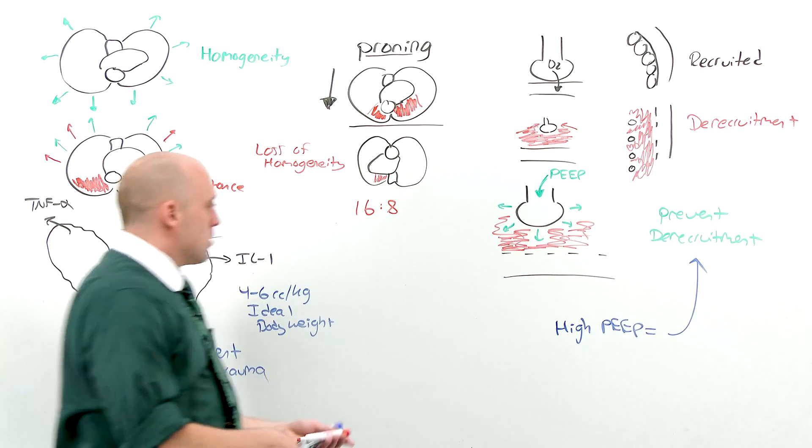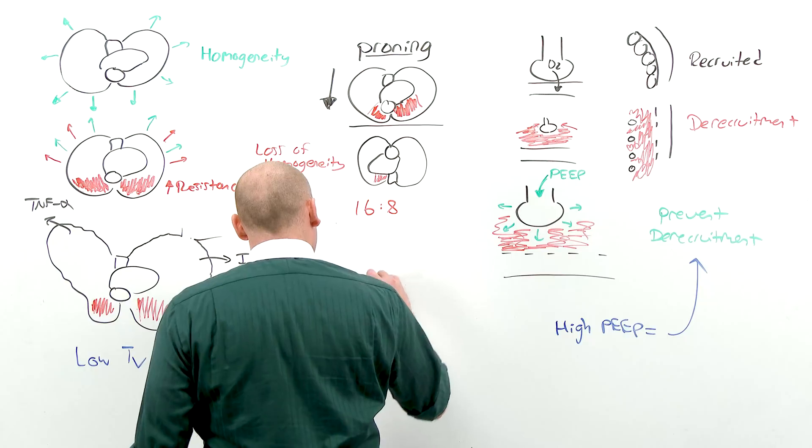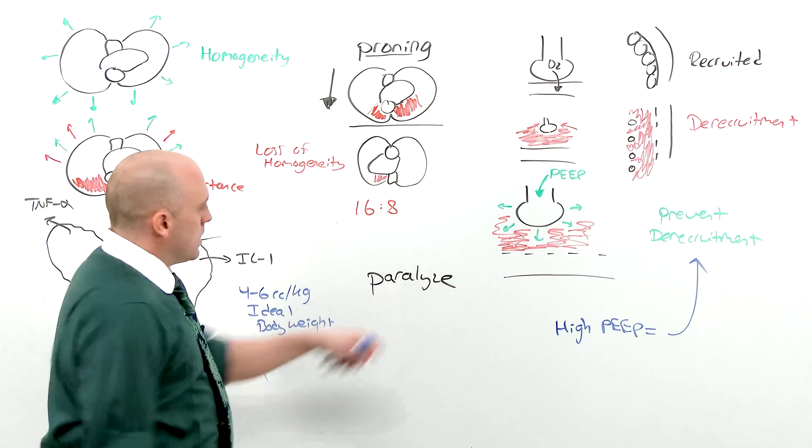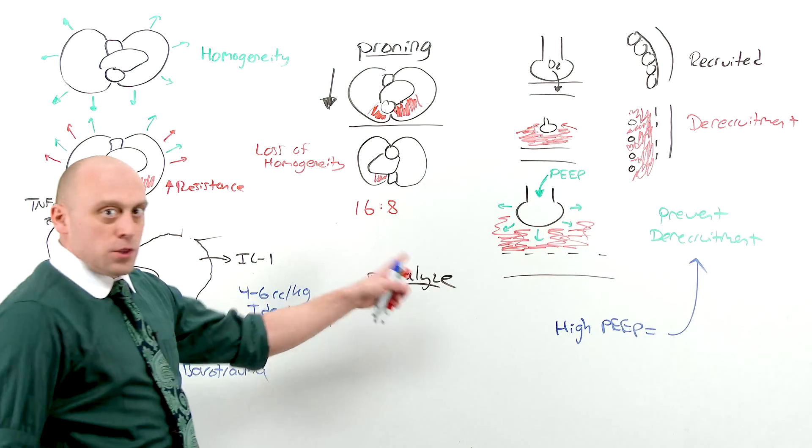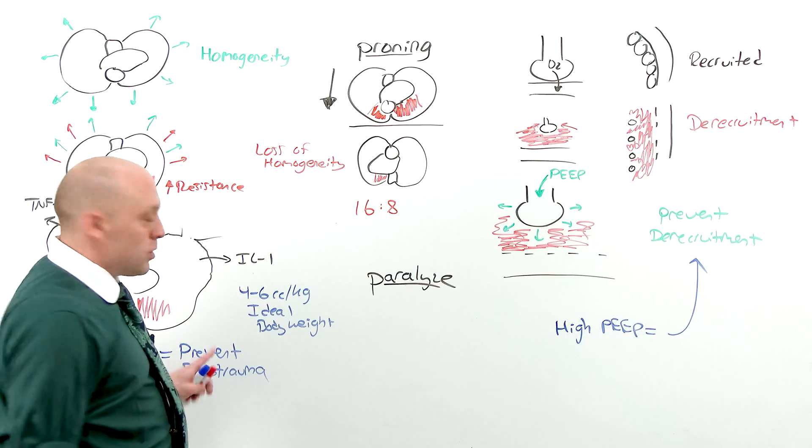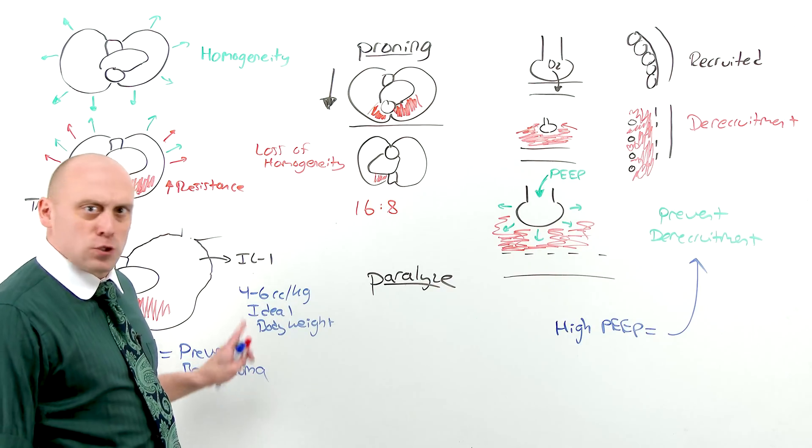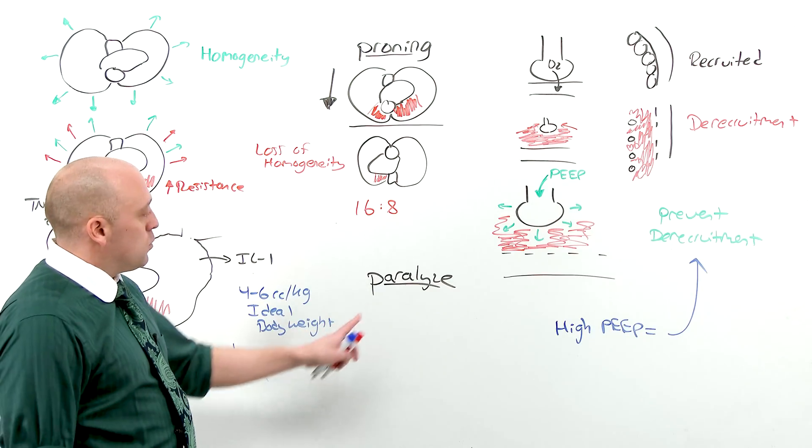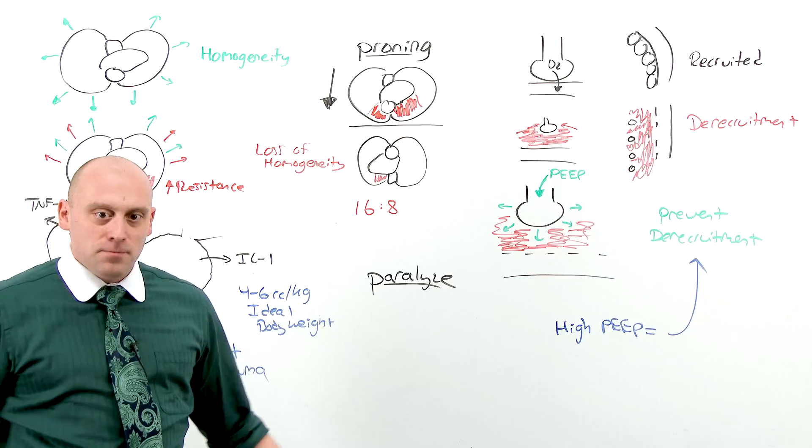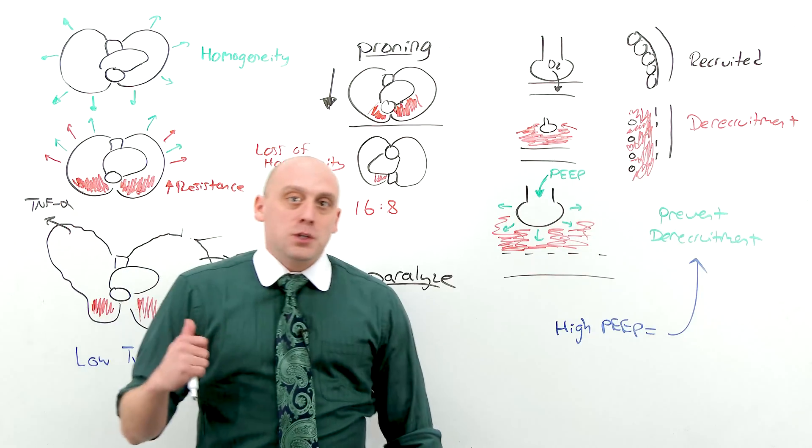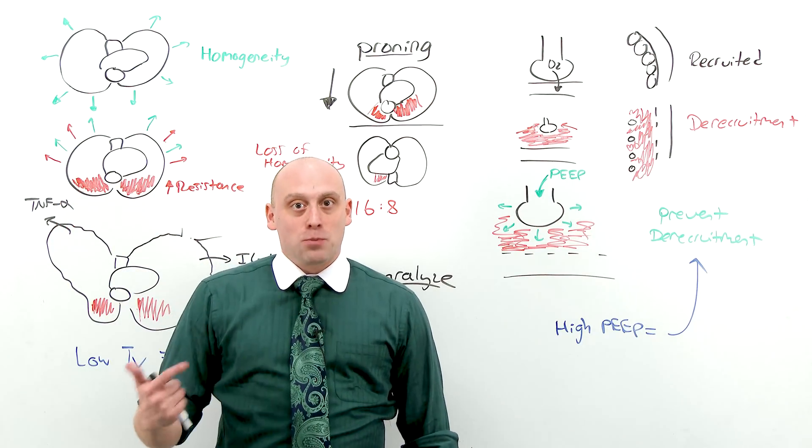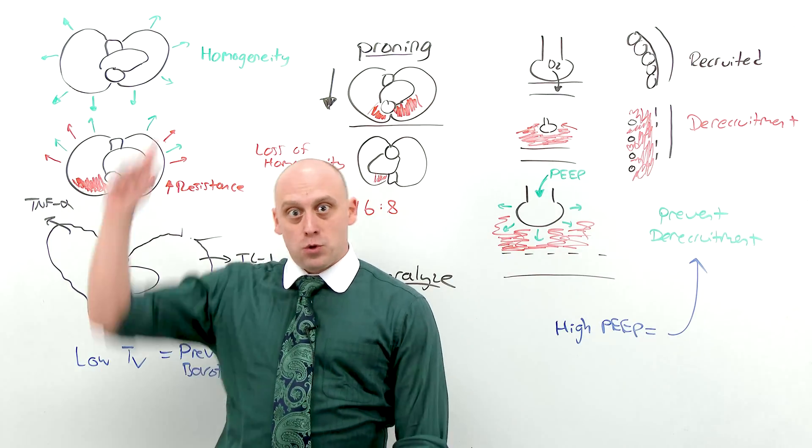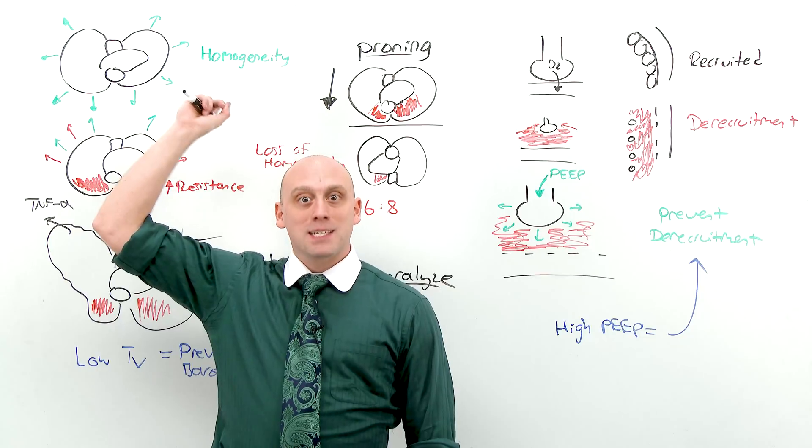And the last thing you can do before you need to call your critical care attending is paralyze. Paralyzing helps with the pressures in the tube. If the patient bites or chews or tries to breathe or do anything, it's going to mess up the pressures in the lung. And if you paralyze them, you eliminate that. I made a joke there. If the person is needing paralytics or proning, you should probably have your fellow nearby. I really wanted to show you that you should do this early, so expect it to happen more often.